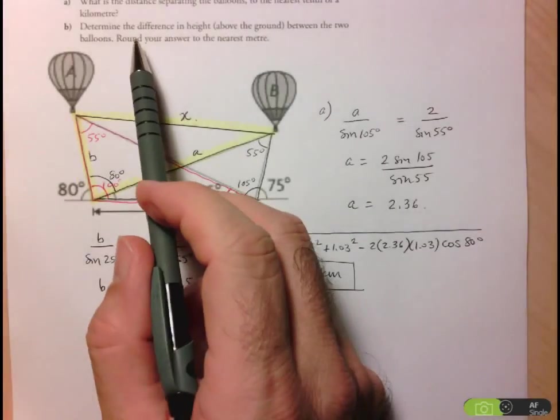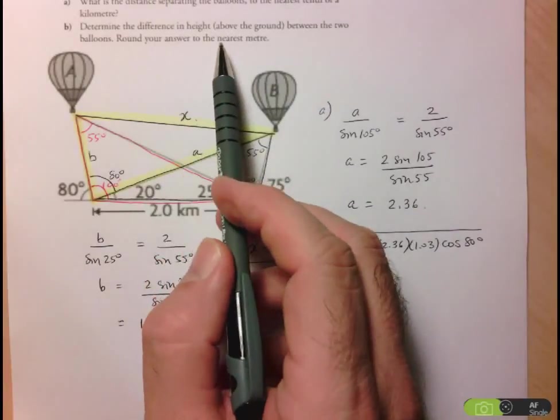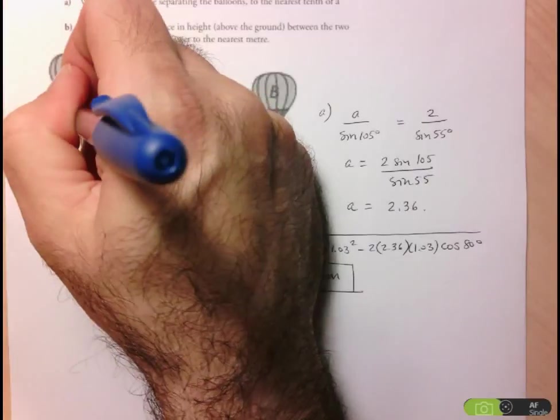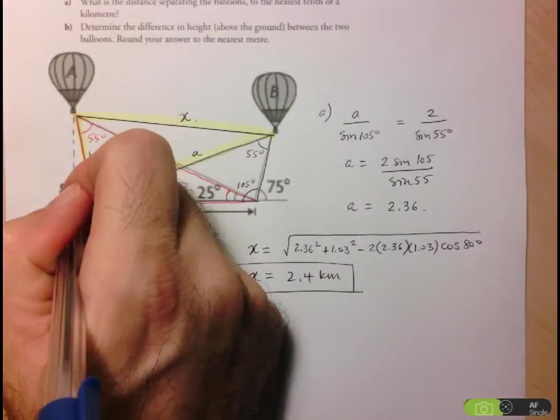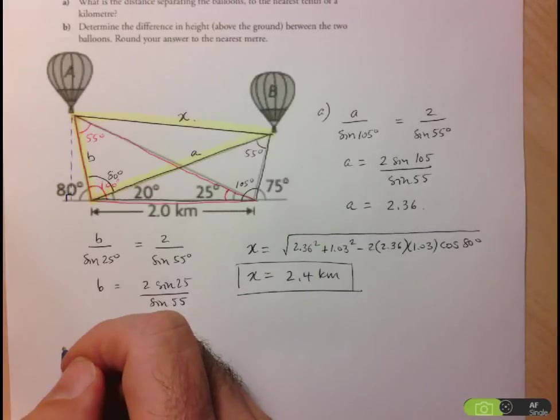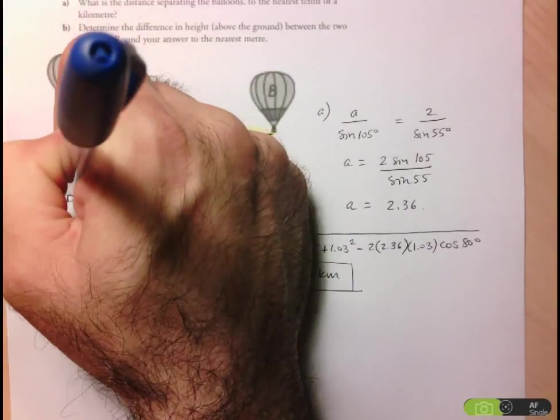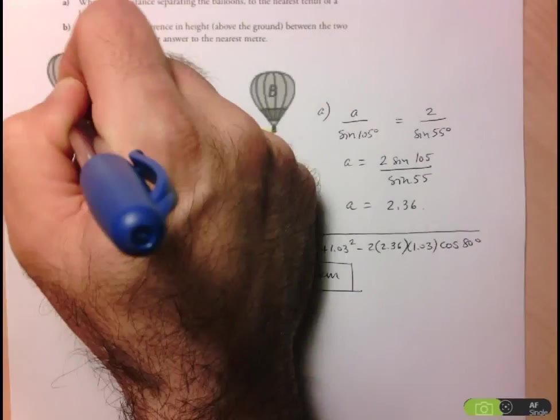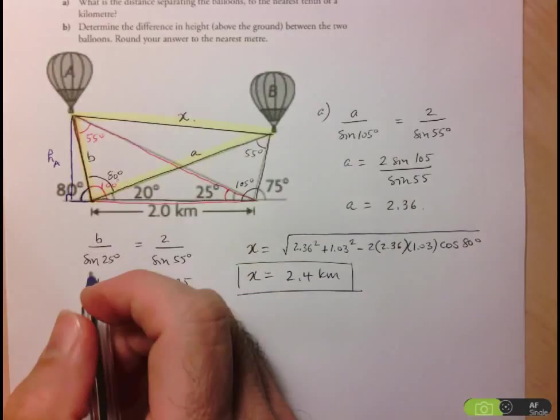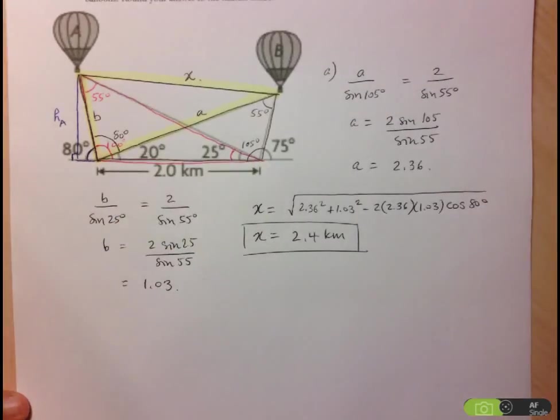Let's see what they're asking for in the second part. They say determine the difference in the height above the ground between the two balloons. And here, round your answer to the nearest meter. So let's be sure that we keep that in mind when we give our final answer. So here, if I'm looking for the height, well, there's the height of A. And since it's assumed that the height will make a right angle to the ground, this is where I might think, hey, maybe I can just use primary trig ratios in a right angle triangle. So let's call this height A. And I notice that this height makes up part of this triangle with the side length B. I know what B is already. I have an angle in that triangle, 80. So I'm looking for the opposite to 80, and I know the hypotenuse, which is B. So that tells me that I can use the sine ratio.